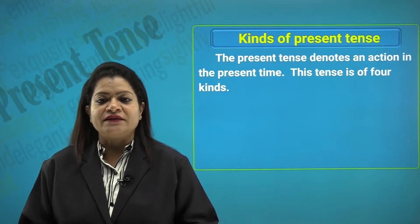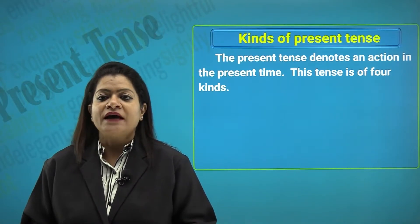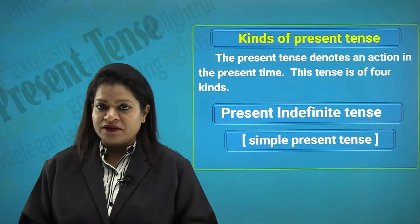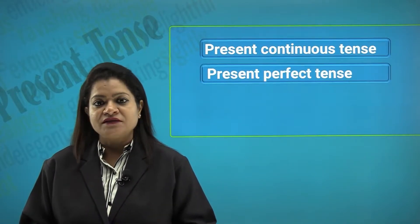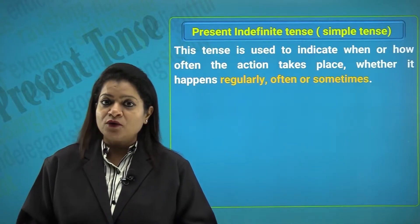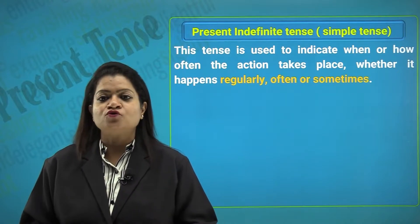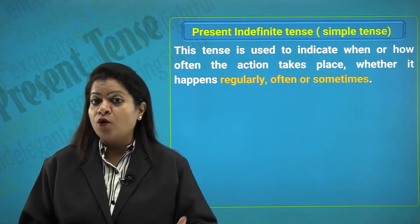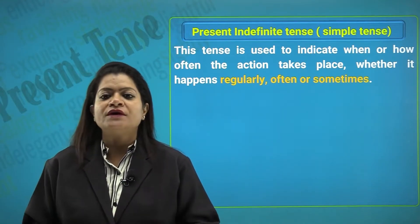Let us look at the kinds. The present tense denotes an action in the present time and it is of four kinds: the present indefinite or simple present tense, the present continuous tense, the present perfect tense, and the present perfect continuous tense. Let us begin with the present indefinite or simple present tense. This tense is used to indicate when or how often the action takes place — whether it happens regularly, often, or sometimes.